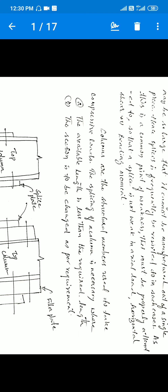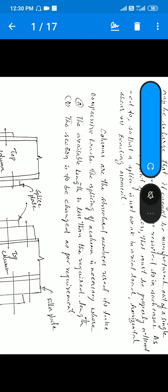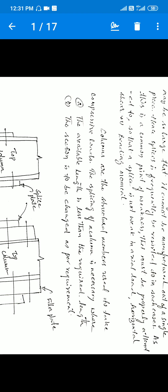Today we will start with column splices. We already know that in a multi-story building, we can't manufacture a single column for a height of 15 meters or 13 meters. So we need to connect columns by joining different column sections together. Column splices depend on different types of columns and different types of loads, which we'll discuss in the next class regarding the design procedure.